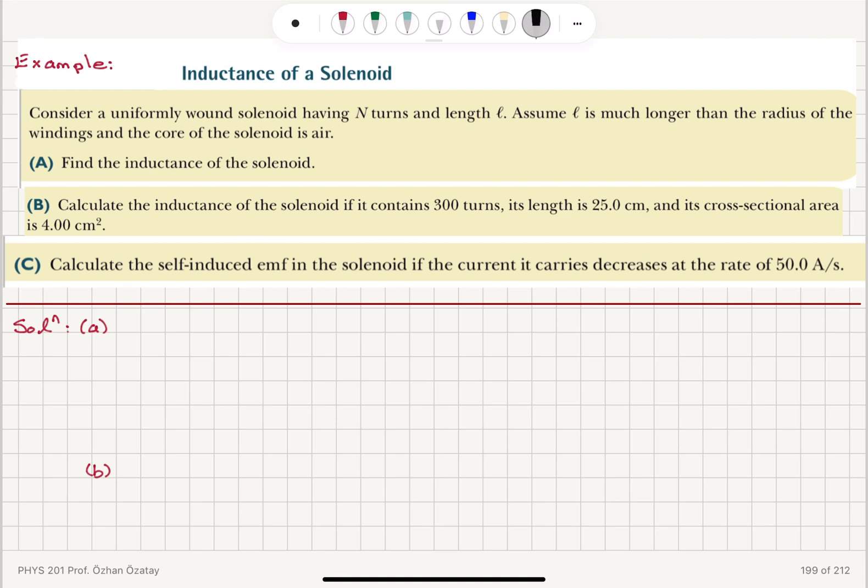The flux through the current loop phi B will be equal to the magnetic field multiplied by the area, because we are assuming we have a more or less uniform magnetic field inside that is parallel to the area vector.